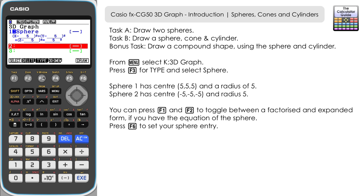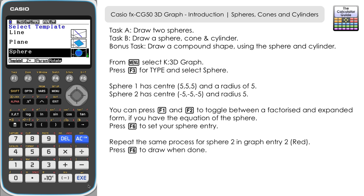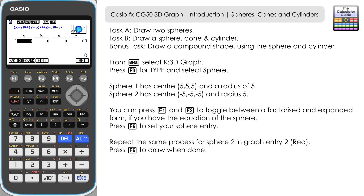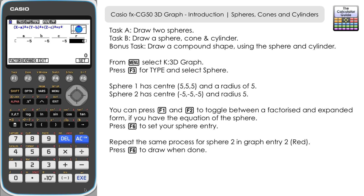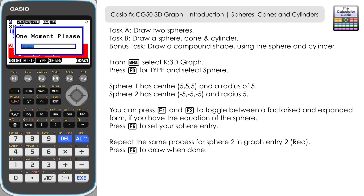Now let's move on to entry 2. Sphere 2 has a center of (-5, -5, -5) and a radius of 5 — very similar but different coordinates for the center. Input all values as negative 5, then the radius as 5, and press F6 to set. We now have our two sphere equations inputted.